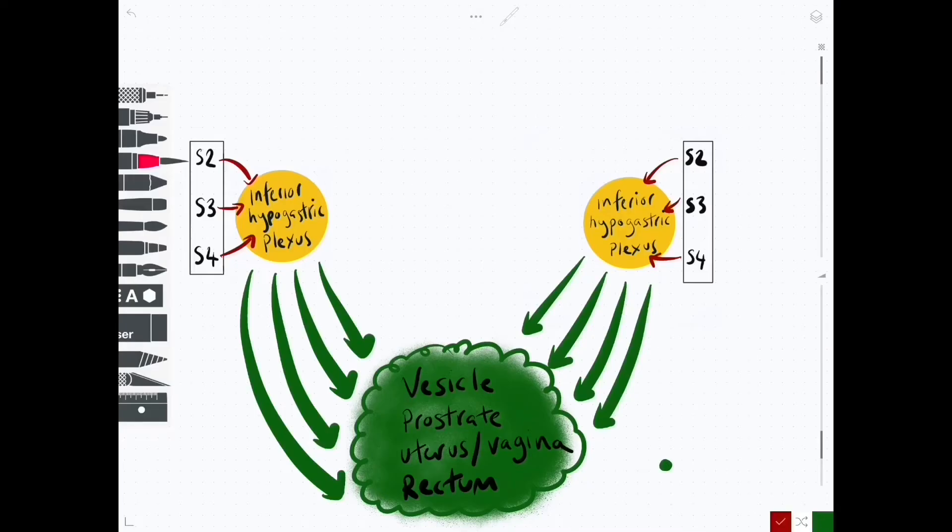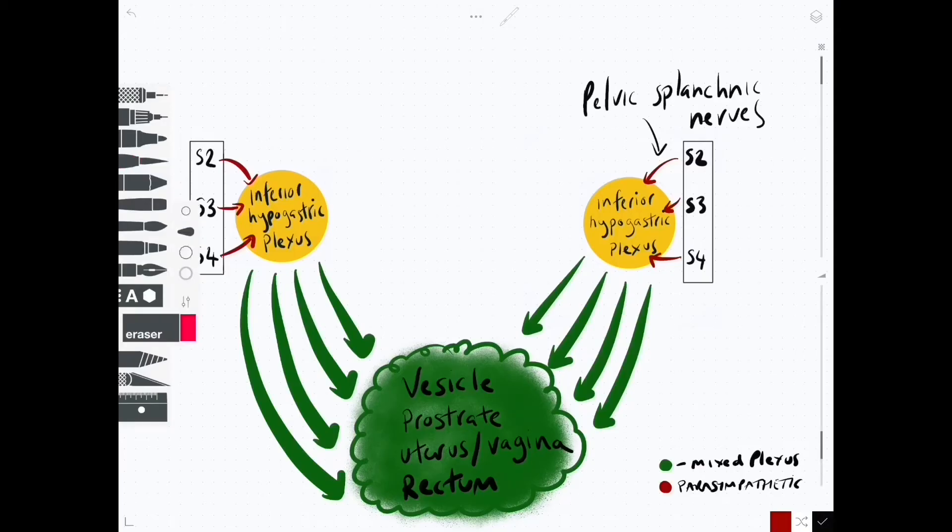So in green we have any plexus which is mixed and in red we have the contribution from the parasympathetic nerve supply. We now need to figure out exactly where the sympathetic nerves are coming from. So the pelvic splanchnic nerves are parasympathetic.